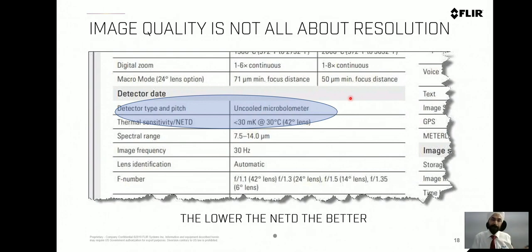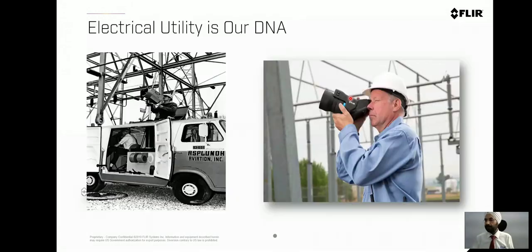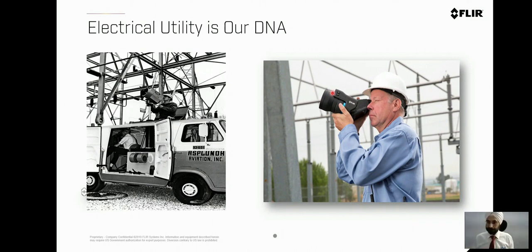Multiple utilities have used these cameras. Mr. Chavda is from a transmission company, which is in our DNA — electrical utility. They have been using our camera. Previously it was mounted on a van, but now the technology has developed a lot. The camera has become very small, very handy, and battery-operated. It can go in the field with a viewfinder for multiple different applications. For utility applications, we have a complete range of products under one umbrella.